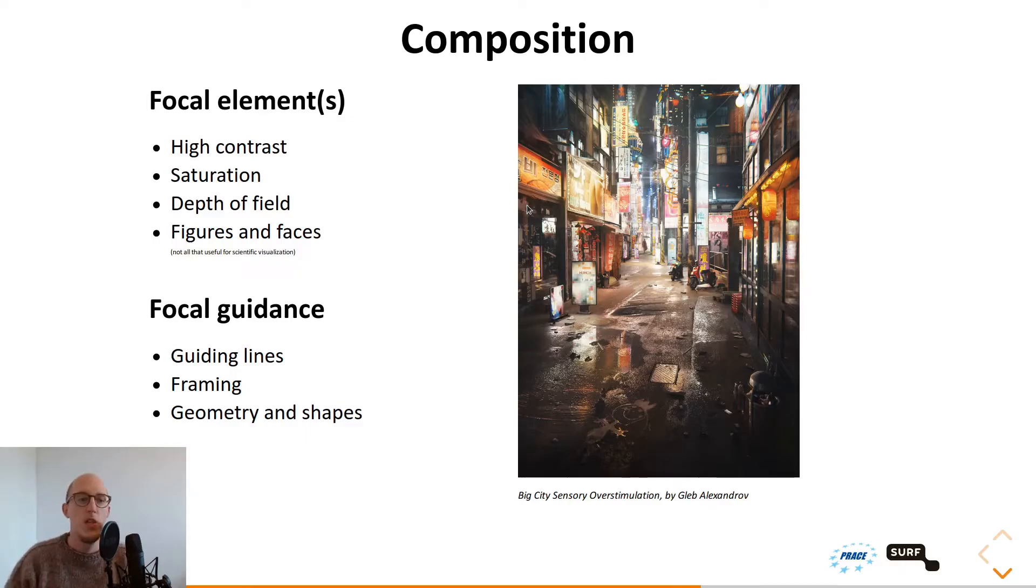So first off, the focal elements. There are multiple focal elements you can use: you can use contrast, you can use saturation, you can use the depth of field, you can use figures and faces. We are naturally drawn towards figures and faces. But yeah, these figures and faces are not very applicable to scientific visualization unless you have, for example, an MRI scan of a face. But you also have to watch out with these focal elements. Don't place too many focal elements in one image because then it can get too clouded and then you don't know where to focus on as a viewer.